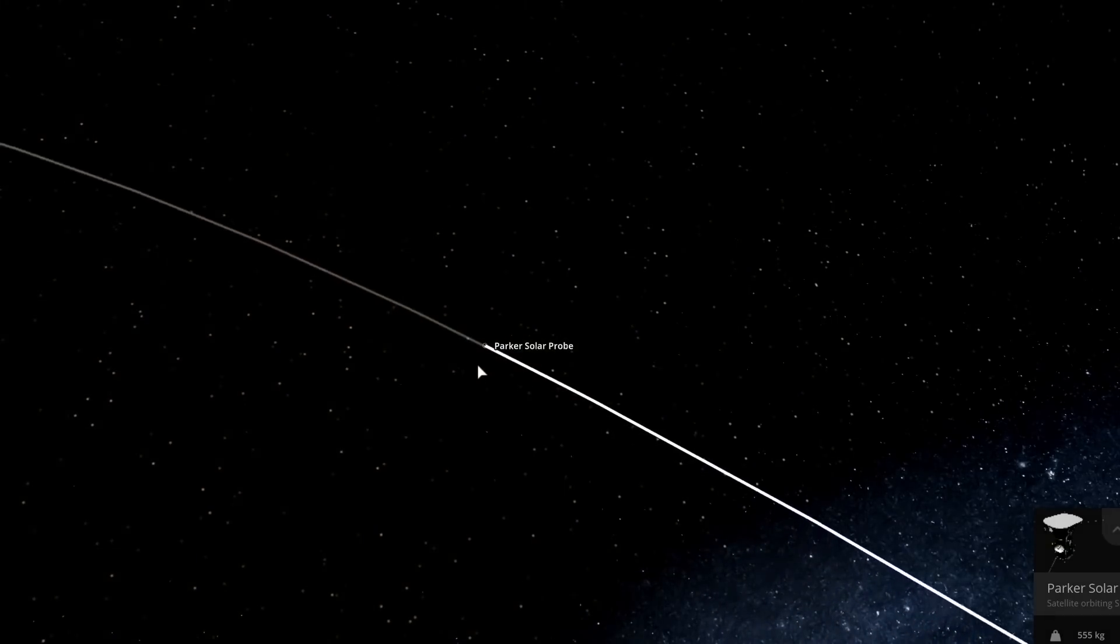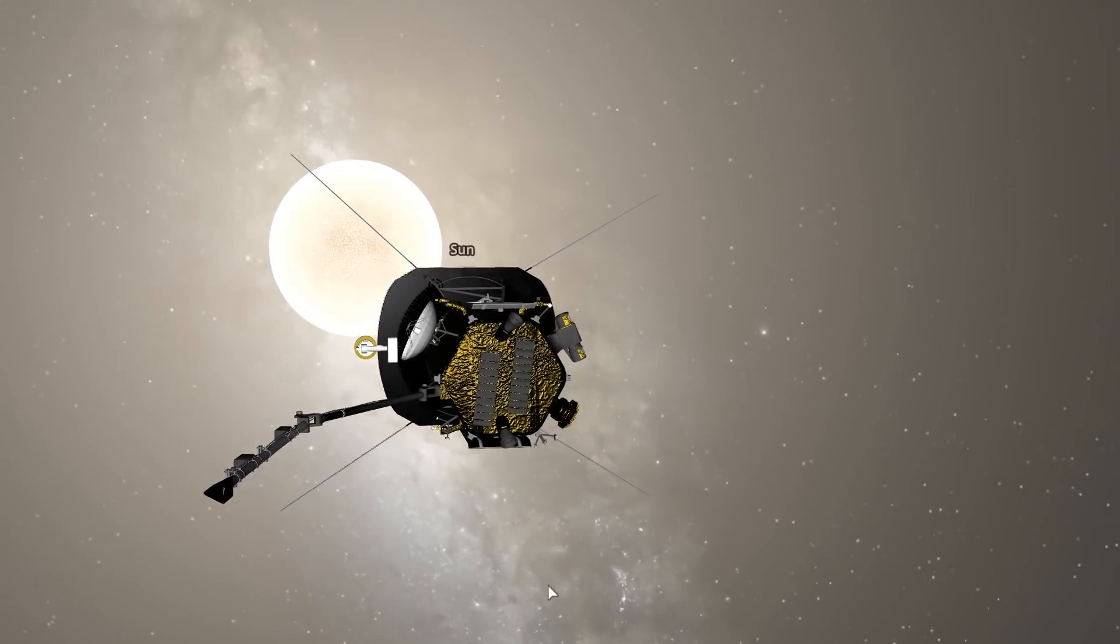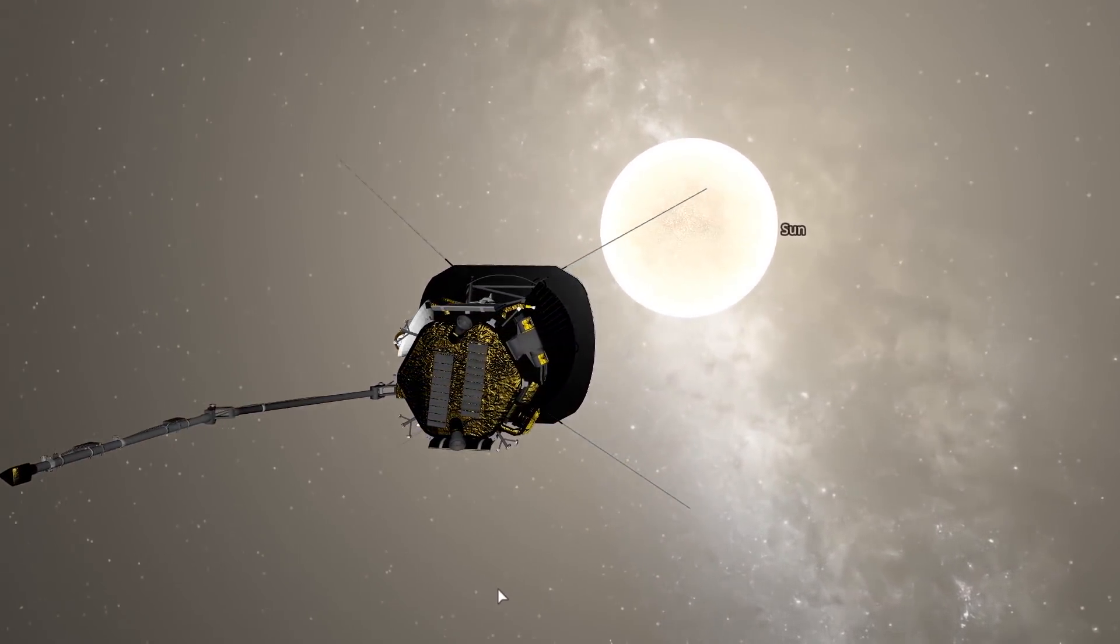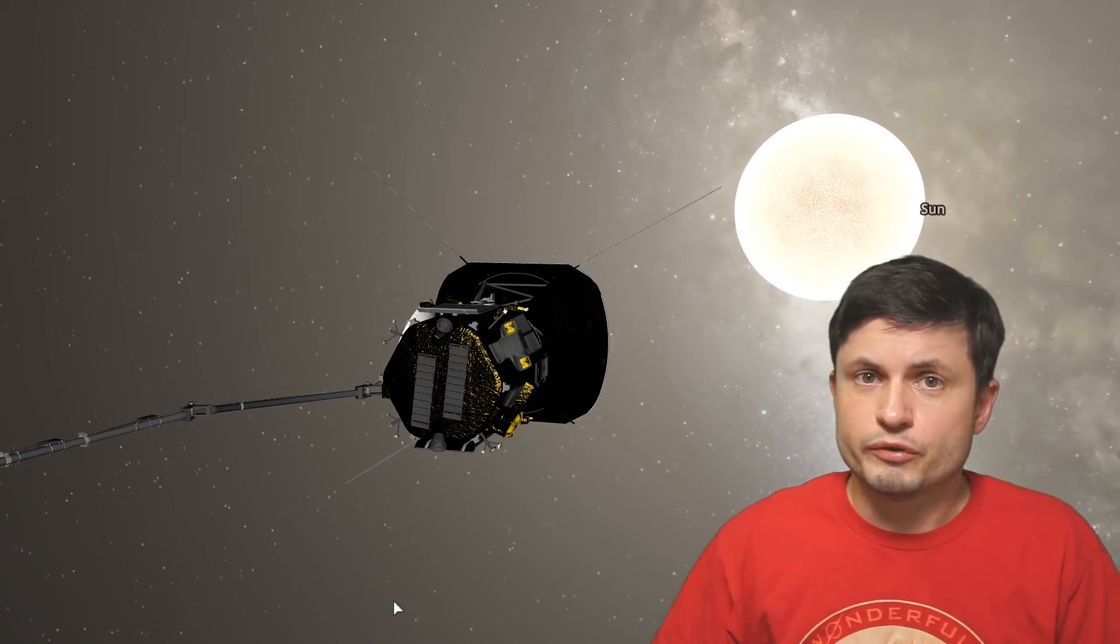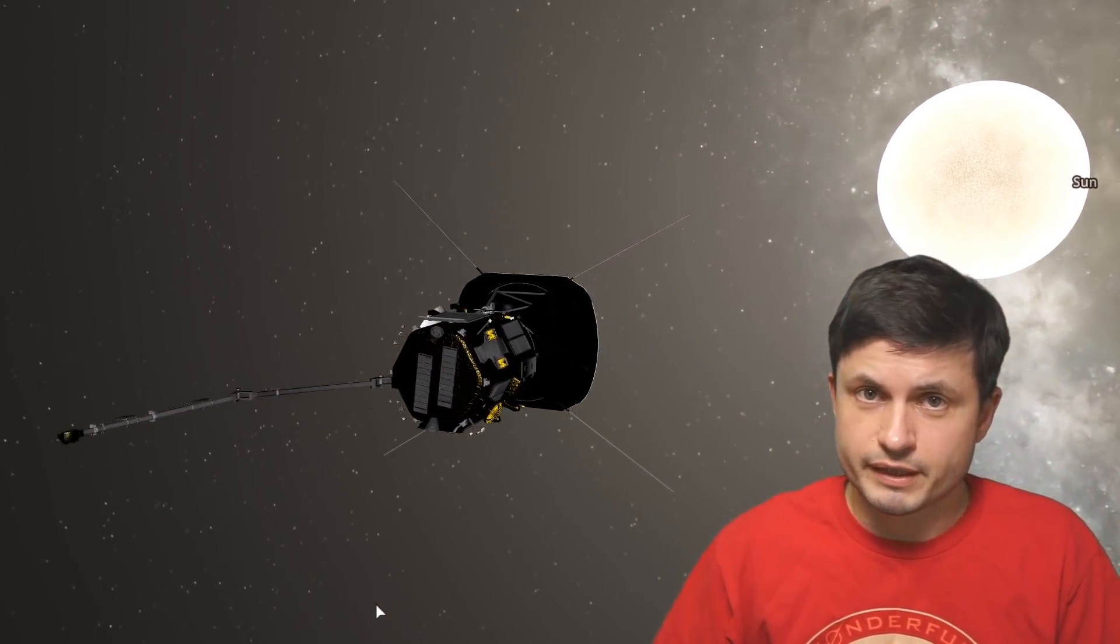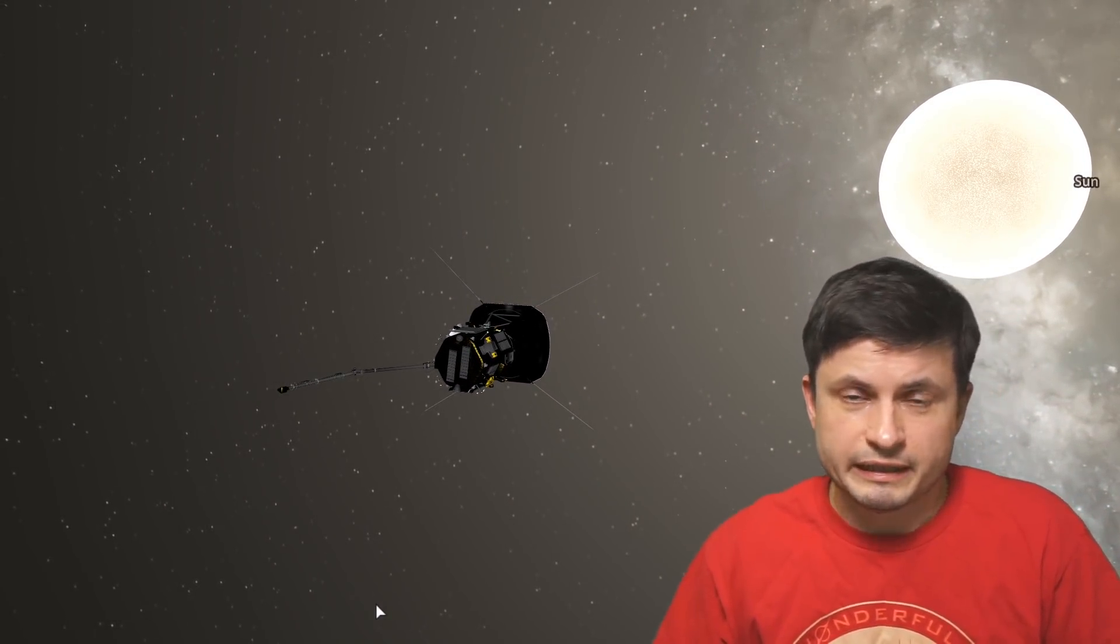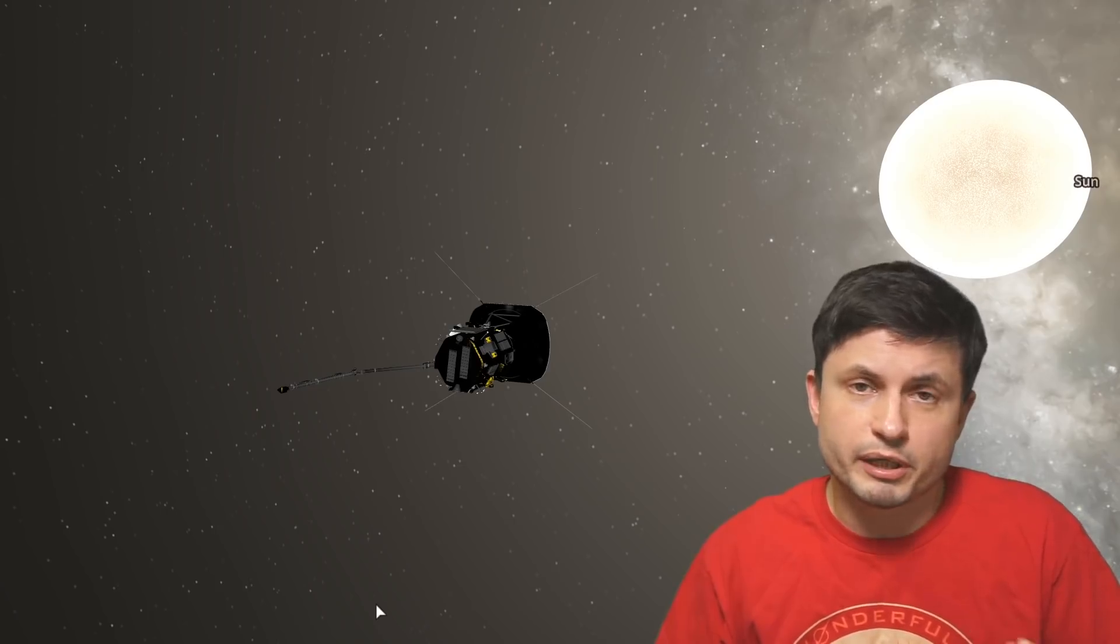The famous Parker Solar Probe that was launched to study the Sun a few years ago has finally crossed the threshold where it unofficially touched the Sun, at least that's what NASA called it. That's because it actually passed through the part of the Sun we refer to as the corona, discovering some really interesting things in the process. Let's discuss this in more detail.